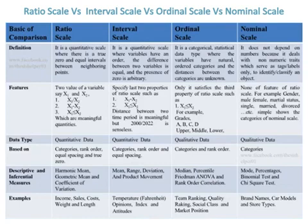In ordinal scale, only the third property of ratio scale is satisfied: x1 is less than or equal to x2. For example, grades A, B, C, D or classifications like upper, middle, lower. In nominal scale, none of the features of ratio scale apply.